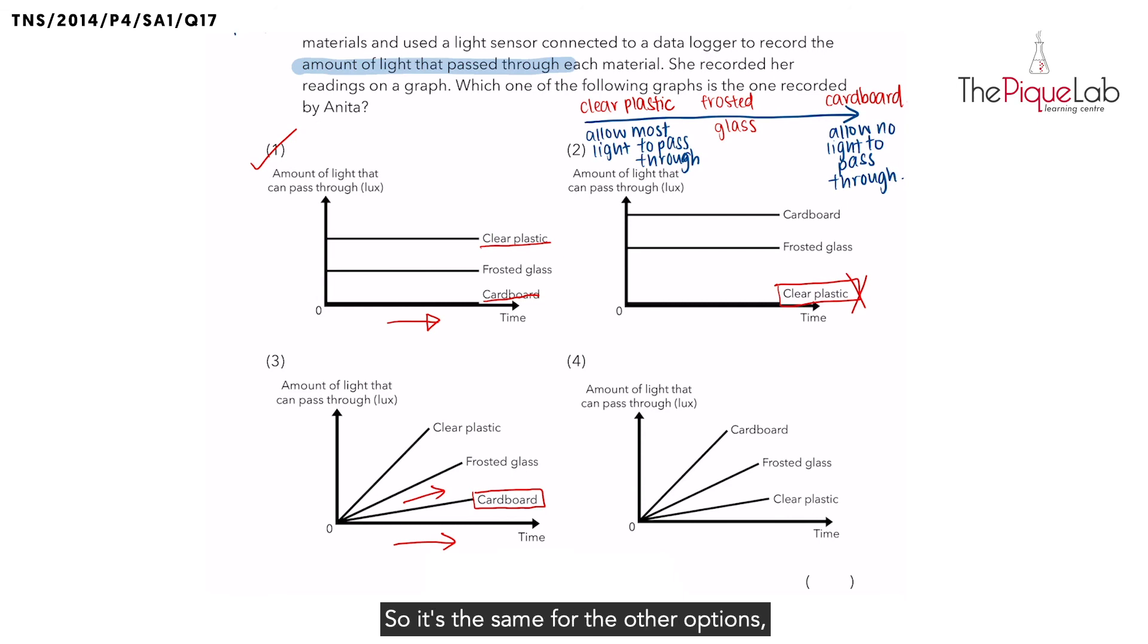So it's the same for the other materials. Even for frosted glass and clear plastic, they are telling you that as time passes, the materials will allow more and more light to pass through - increasing in transparency. That is definitely not correct. So this option is wrong.